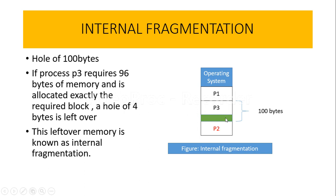When the operating system allocates the 96 bytes of memory requested by process P3, we are left with a hole of 4 bytes. A hole means it is the free memory space left over. This leftover memory is known as internal fragmentation.